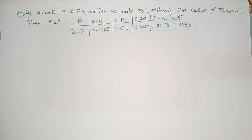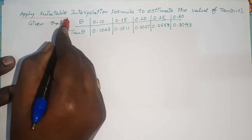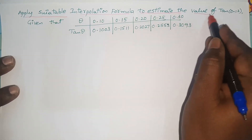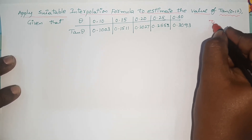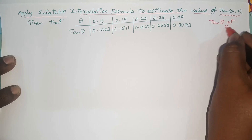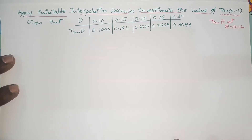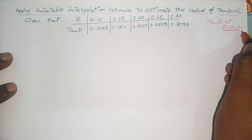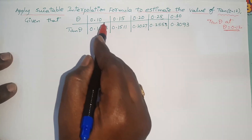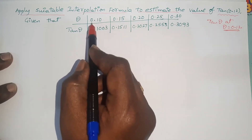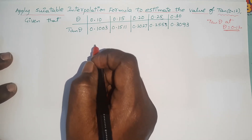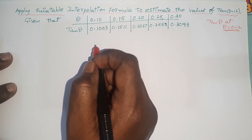Hi everyone, welcome back to our channel. In this video I would like to give another example on interpolation. The statement of the given problem: apply a suitable interpolation formula to estimate the value of tan(0.12). We have to find the value of tan(theta) at theta = 0.12. This point is at the first interval of the given data, which is why Newton's forward interpolation formula is the suitable formula.